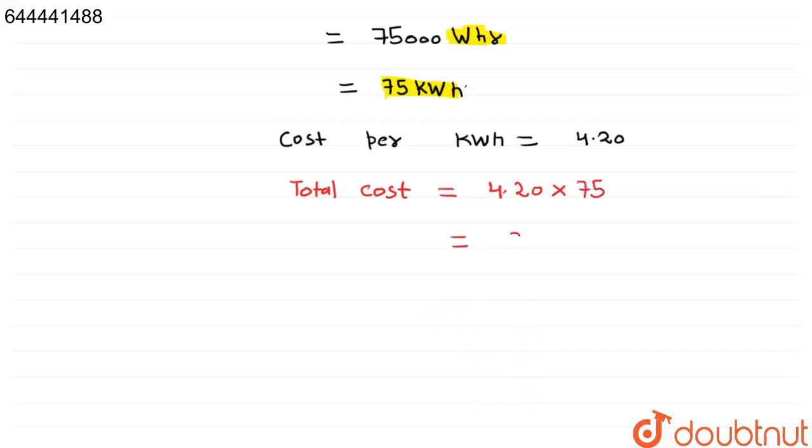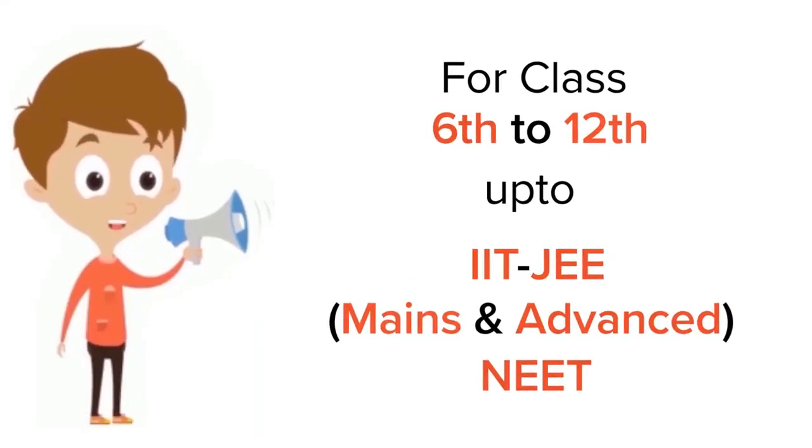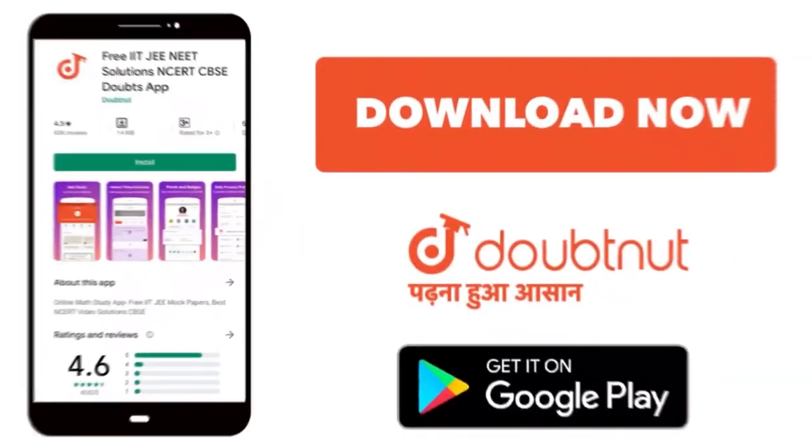After multiplying you get 315, this is the answer. For class 6 to 12, IIT-JEE and NEET level, trusted by more than 5 crore students, download Doubtnet today.